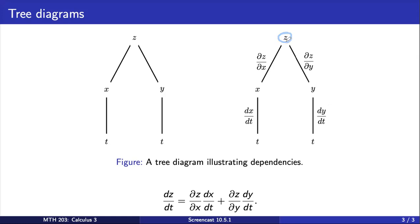So we're going to trace this path. As we trace this path, we pass the partial derivative of z with respect to x and the derivative of x with respect to t.